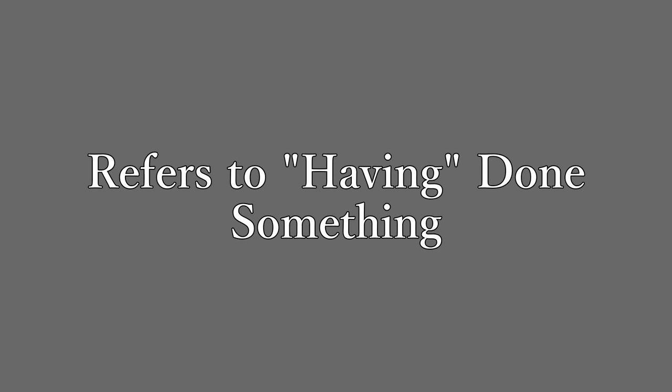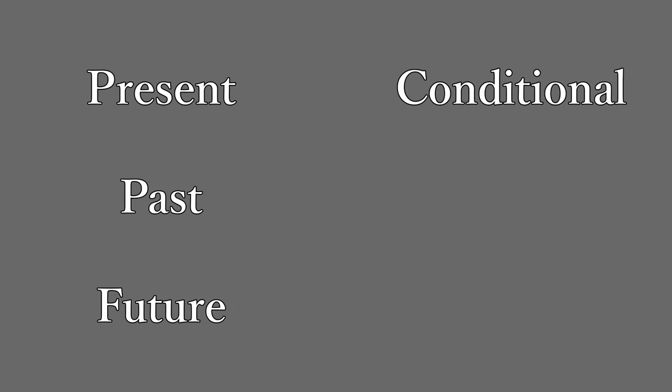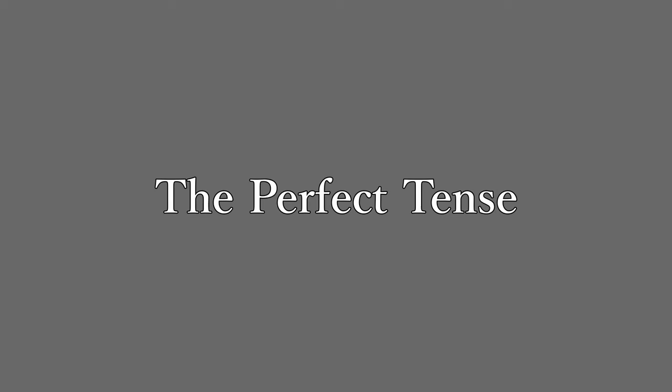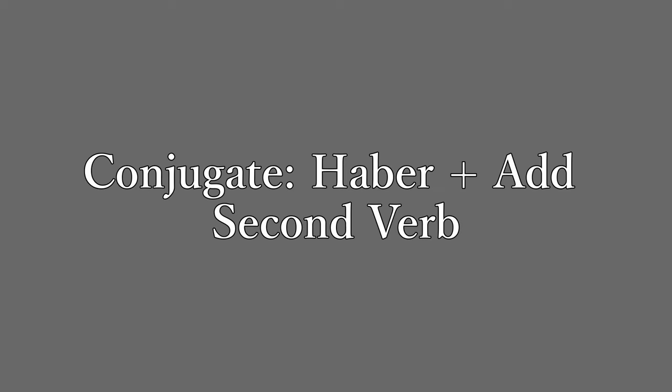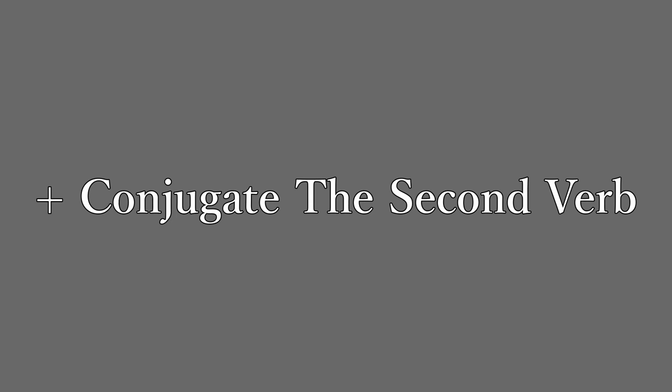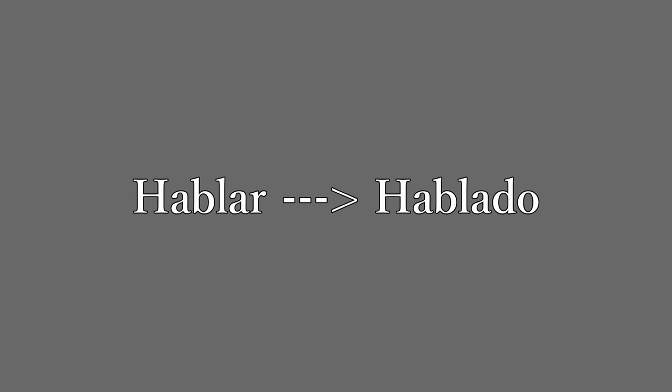Next up, we have the special verb haber — the auxiliary version of 'to have' in English. This does not mean possessing something, but rather having done something. If we conjugate haber in the present, past, future, and conditional tense, we will have made something called the perfect tense. You conjugate haber and add another verb in its past participle form. For AR verbs, take away the AR and add ADO — so hablar becomes hablado. For ER and IR verbs, take away the ending and add IDO.